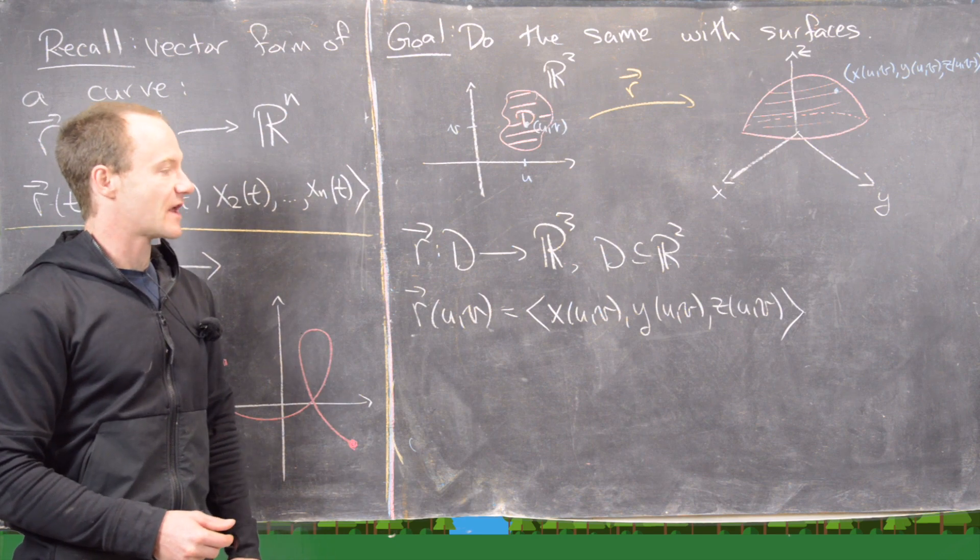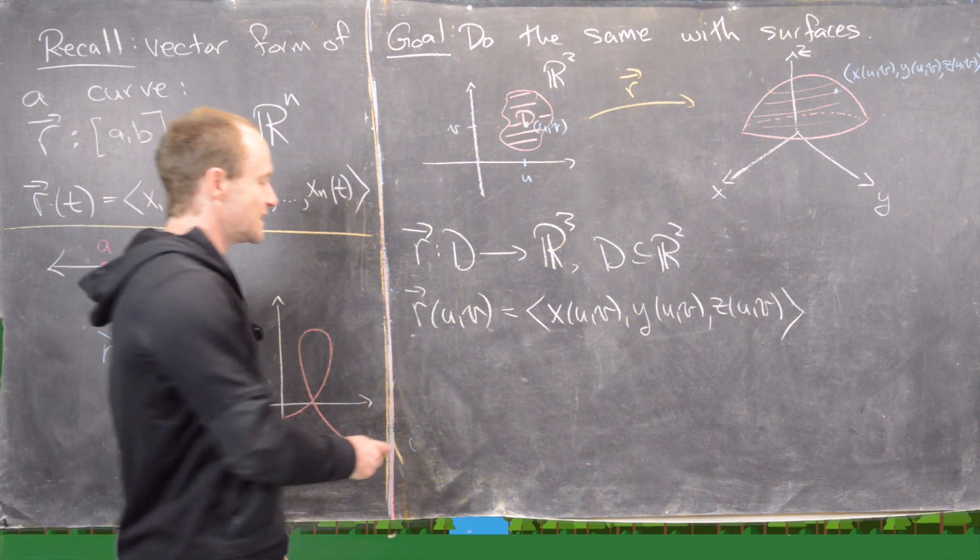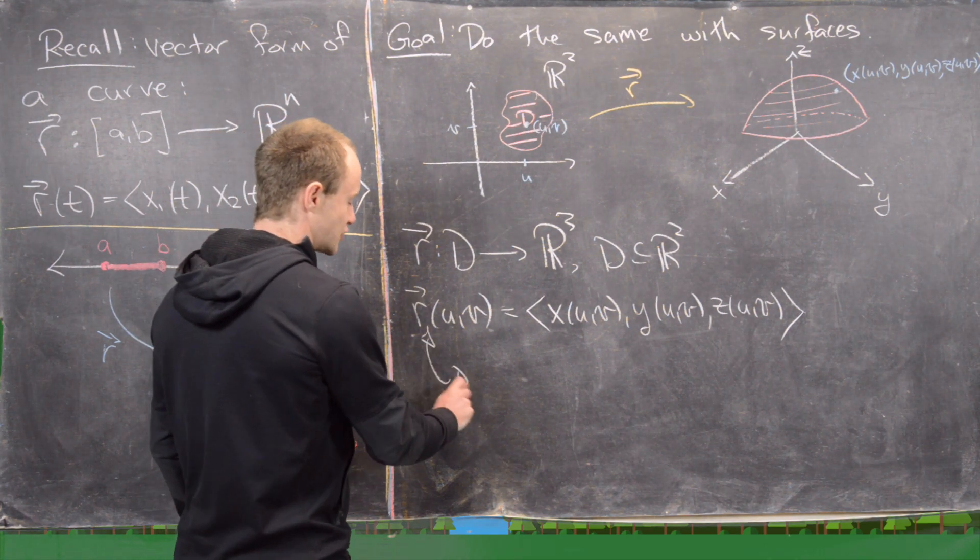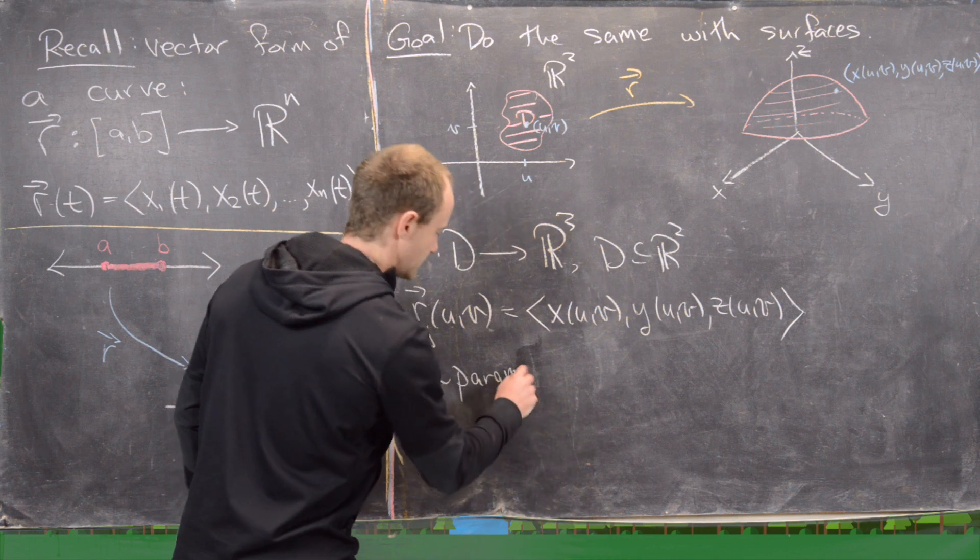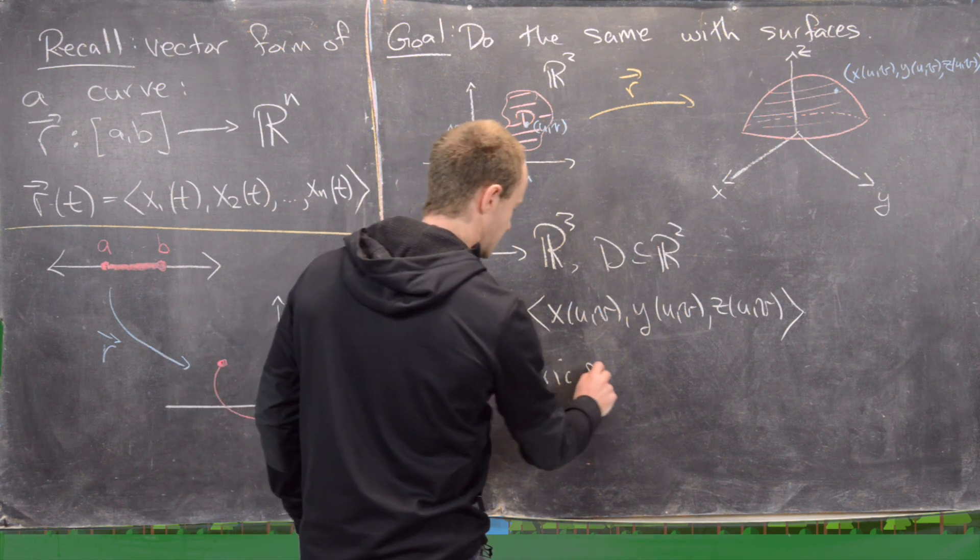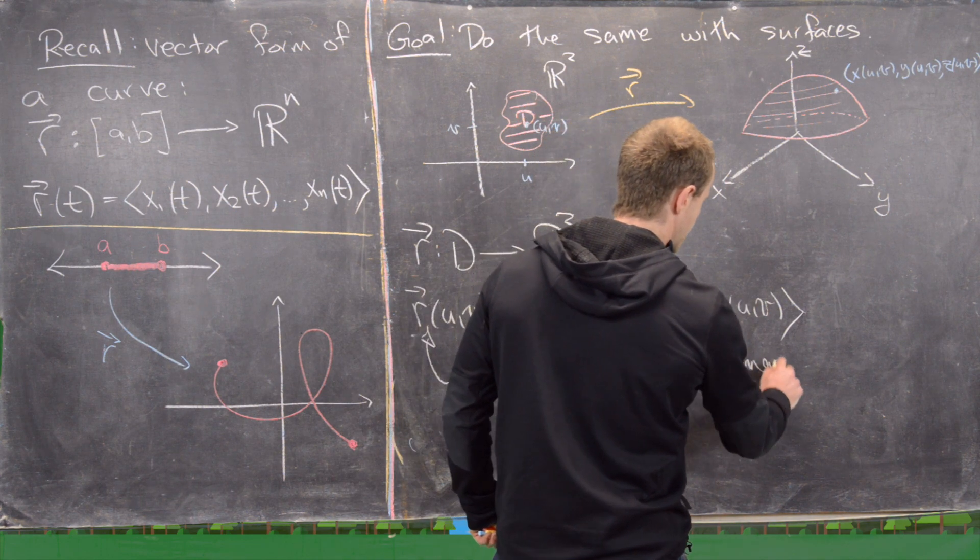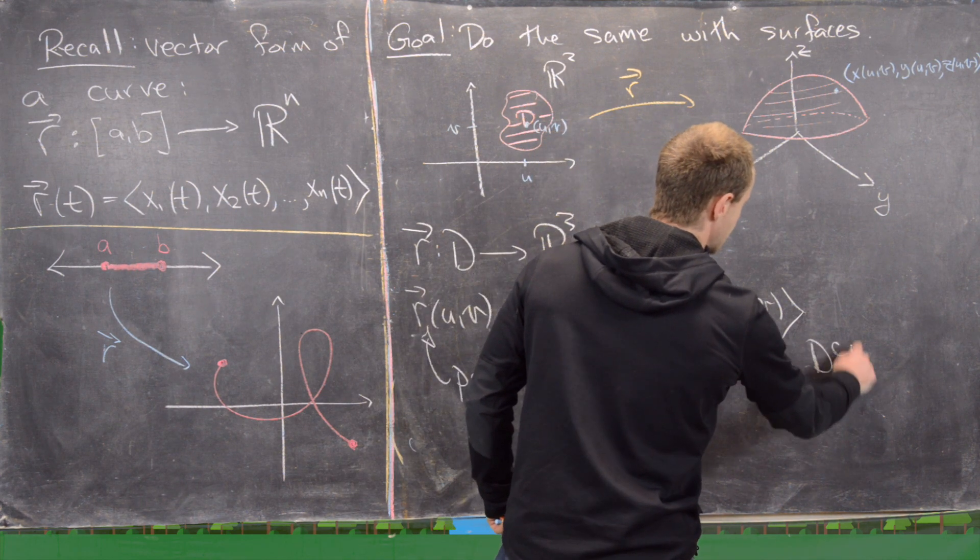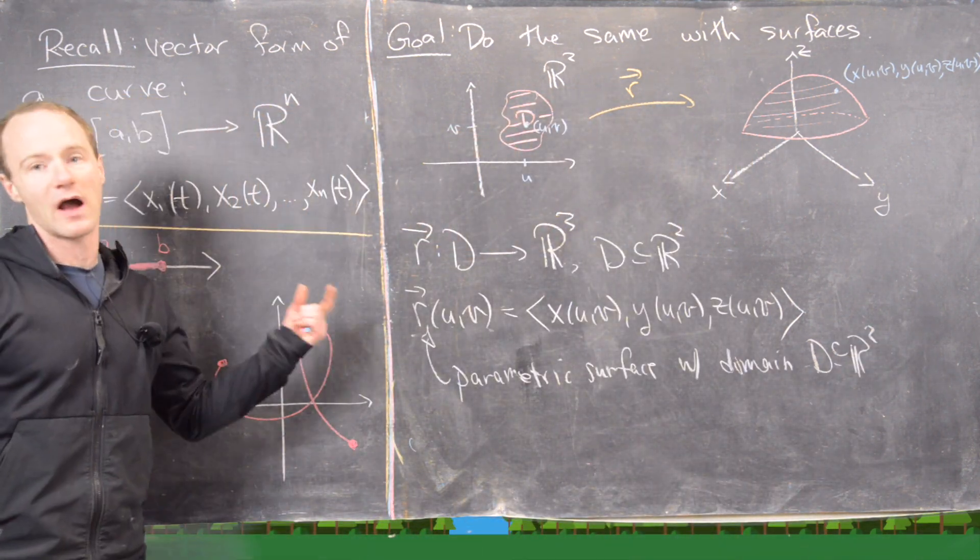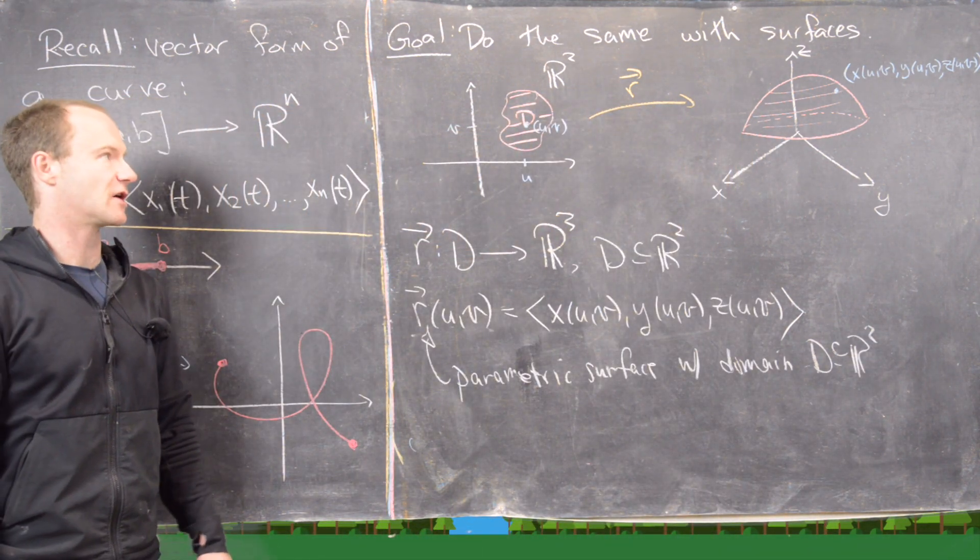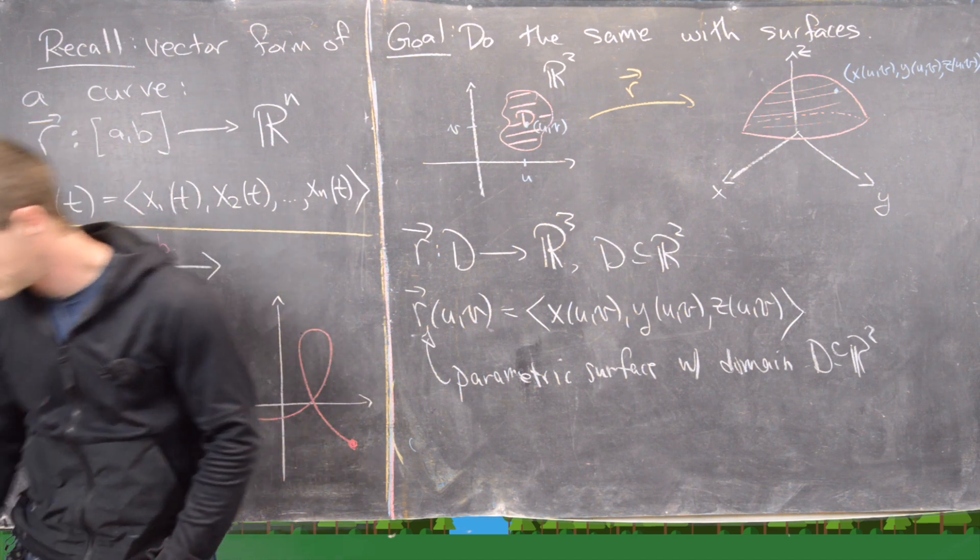So now that we have kind of our setup, I want to give a name to this. So this is called a parametric surface with a domain of D, and I'll just point out that that's happening in R^2. Now, I want to go through some examples of these parametric surfaces. I'll erase the board, and then we'll do that.